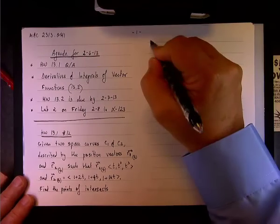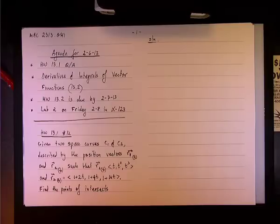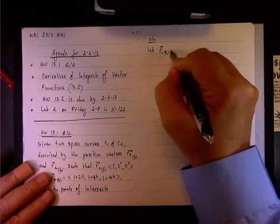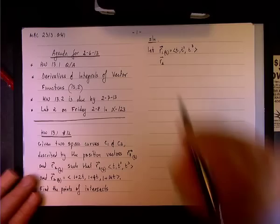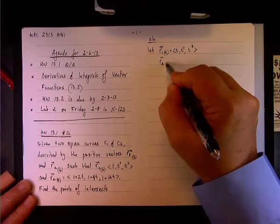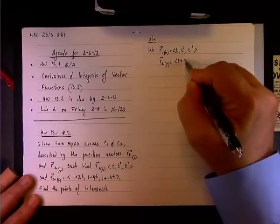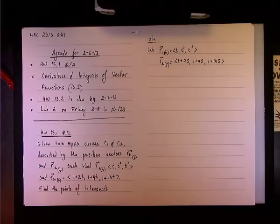In order to solve this, you need to realize that the parameter T for one vector is not the same as the parameter for the other vector. We have seen that before in section 12.5, where you had a vector in T and another vector in S. We'll do the same thing here. We let R1 of T equal <T, T², T³>, and we define R2 in terms of S: <1+2s, 1+4s, 1+14s>.